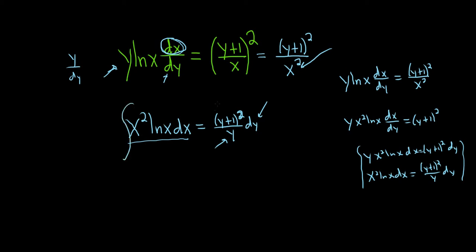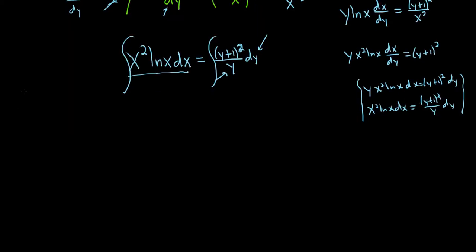All right, now we integrate both sides. So this integral here on the left is going to require a formula. It's the integration by parts formula. So recall, if you have the integral of u dv, this is equal to uv minus the integral of v du.